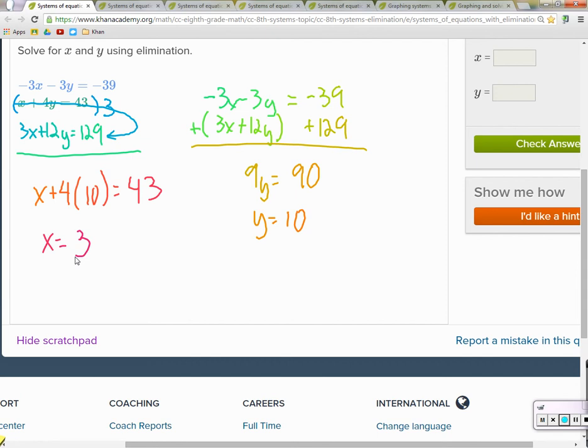So what's the solution to this equation? The solution of, system of equations. 3 and 10, 3 for x, 10 for y, 3 for x. 3 for x, 10 for y.